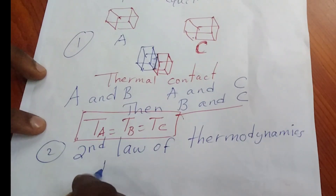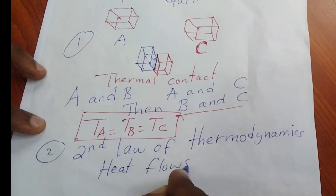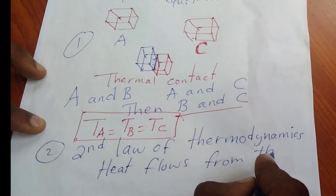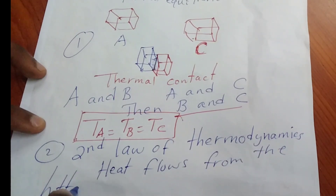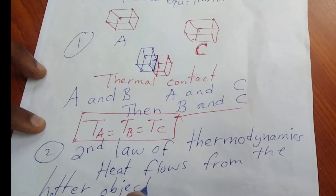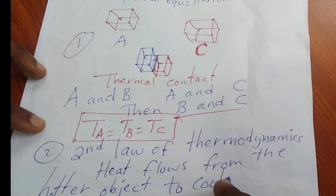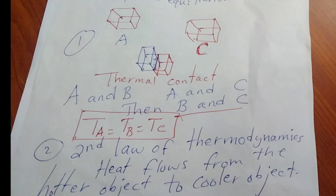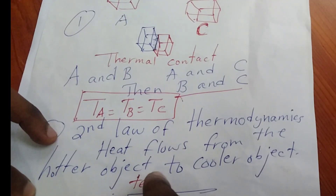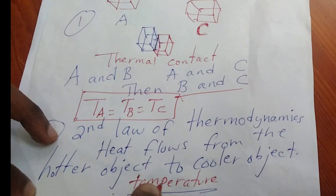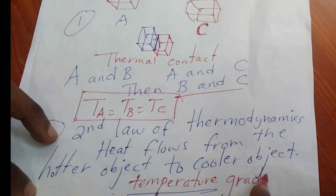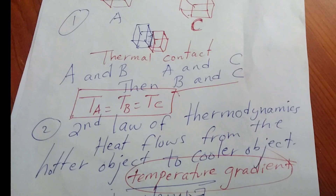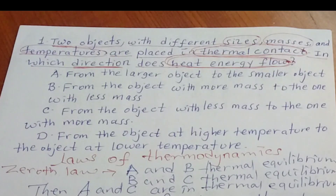Heat flows from the hotter object to the cooler object. When there is a temperature gradient — a temperature difference — heat flow occurs. According to the laws of thermodynamics, it is only the temperature gradient that makes heat flow from one object to another object.